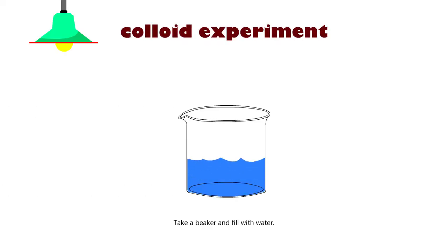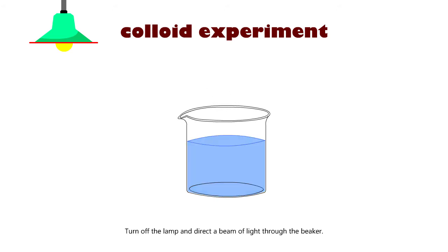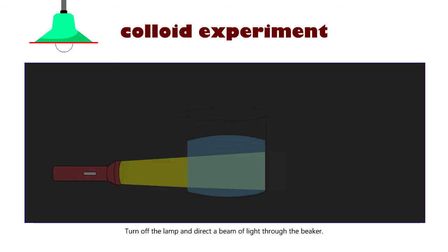Take a beaker and fill it with water. Add a few drops of white fluid latex into the beaker and stir. Turn off the lamp and direct a beam of light through the beaker. As we can see, the path of light is visible through the mixture.